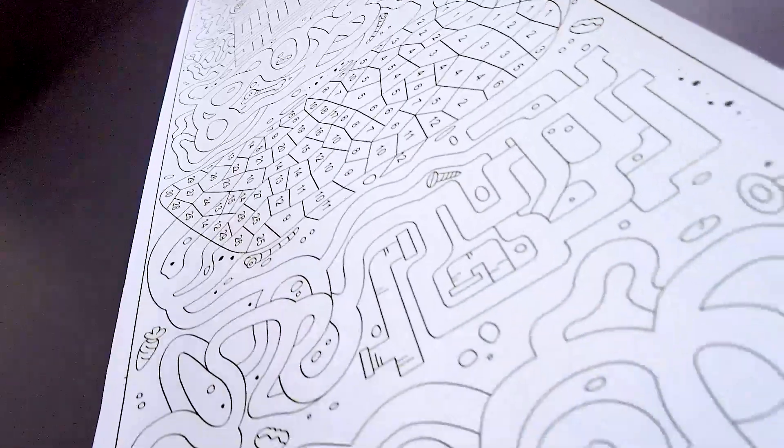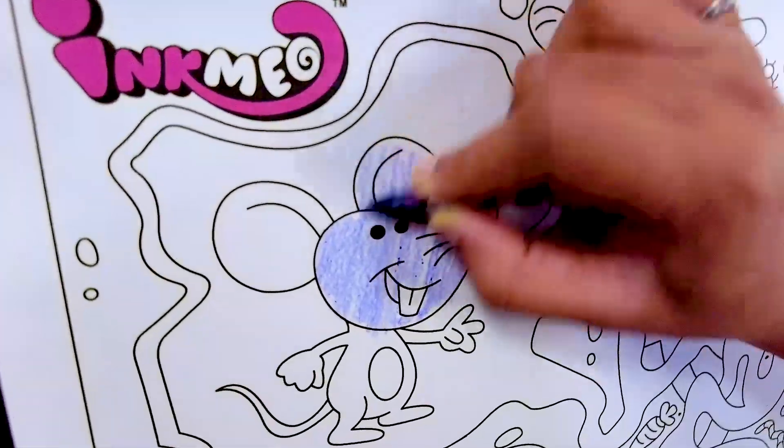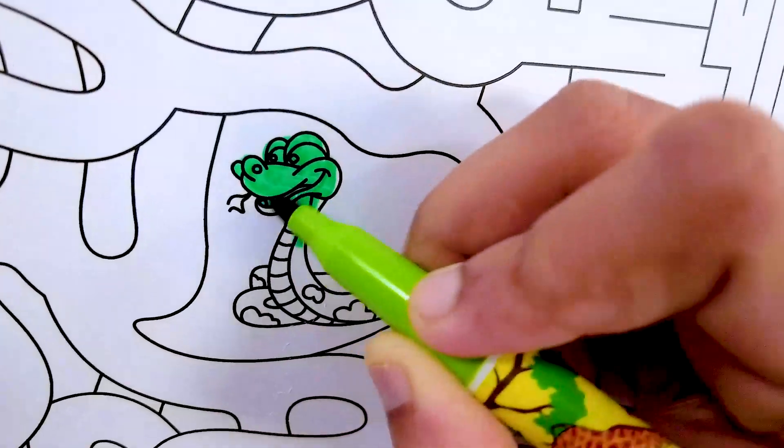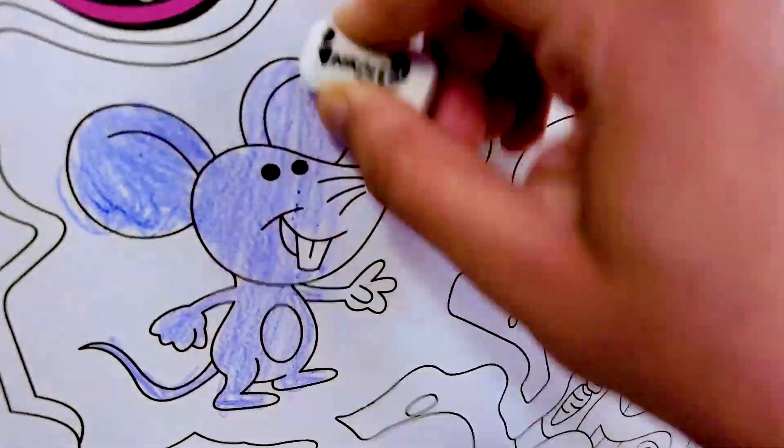The versatility of these sheets allows kids to color pictures using crayons or even sketch pens and wipe them away easily using erasers or a wet cloth.